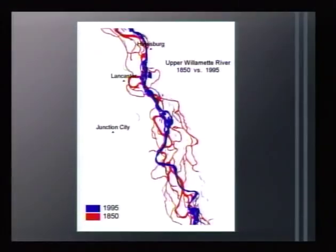Here is an example of how the river system has changed. In dark blue, you see the river in 1995; in red, how complex this same reach was in 1850. This very complex braided river system has become extremely simplified and narrowed into a narrow single channel.